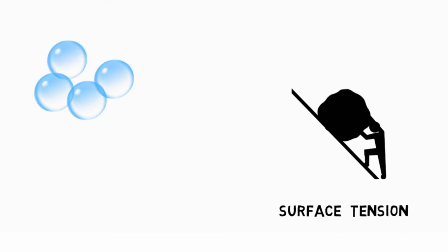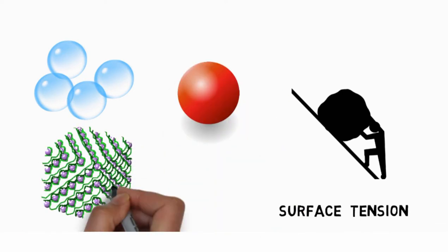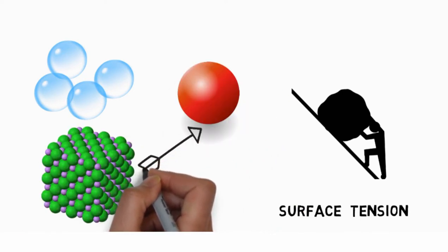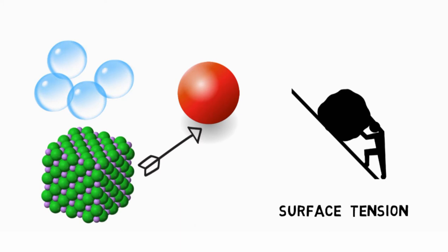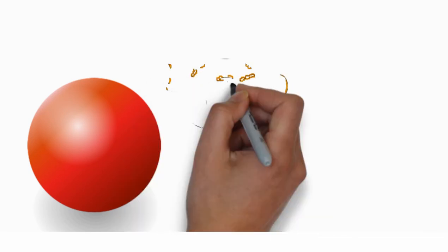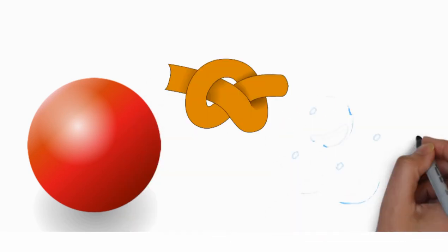Bubbles are spherical because of a force called surface tension. It pulls the molecules tightly together, and the closer they pull, the more compact they are, leading to a spherical shape. Since a sphere is when you achieve the tightest possible grouping of particles, hence the soap bubbles are spherical in shape.